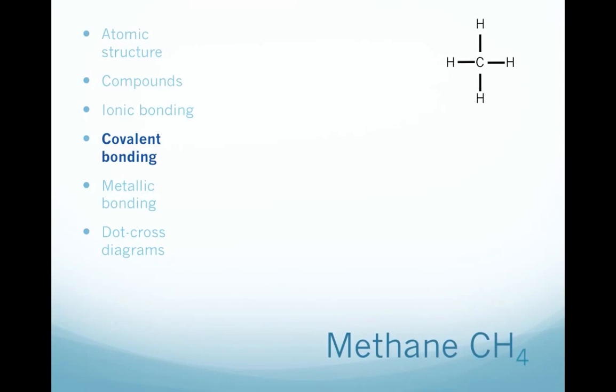When we're representing covalent structures, we can do it in a variety of ways. I showed you the bonding of methane with the formula CH4. We can draw a displayed formula like this with the covalent bond represented by a line. Or we can do a dot-cross diagram.